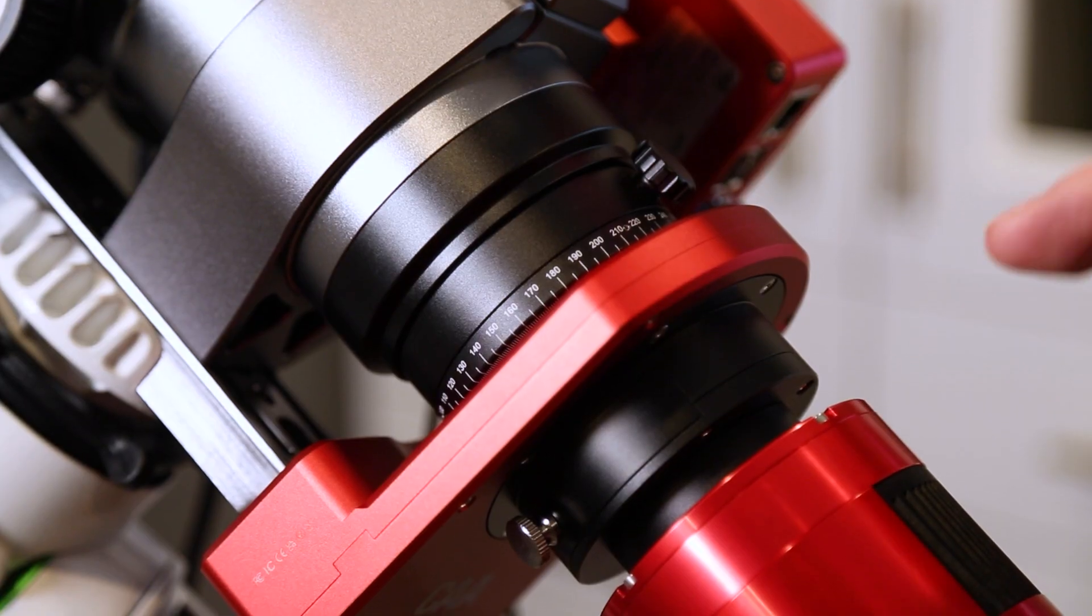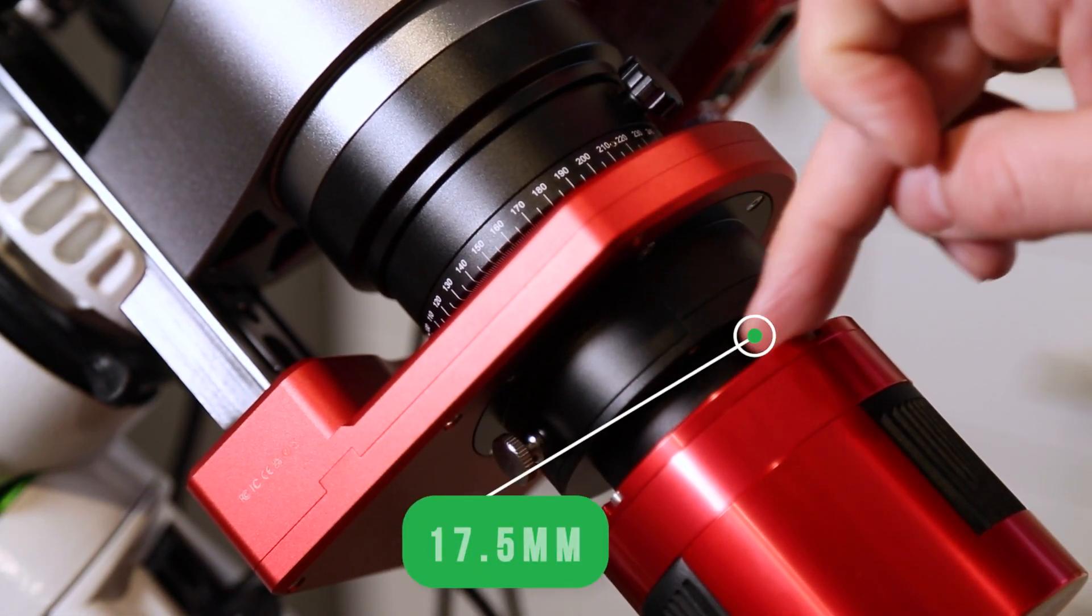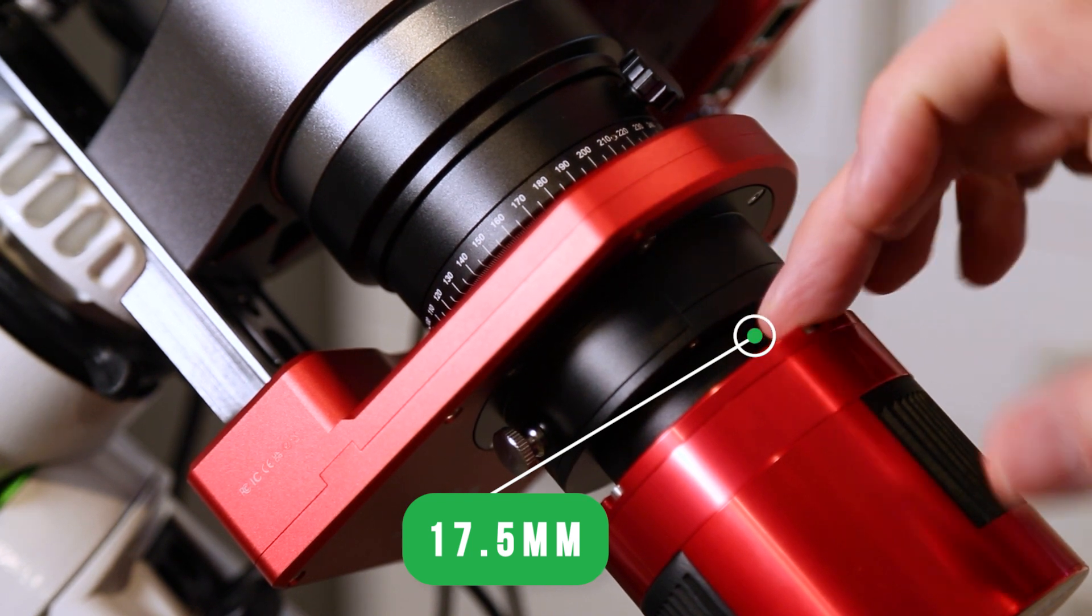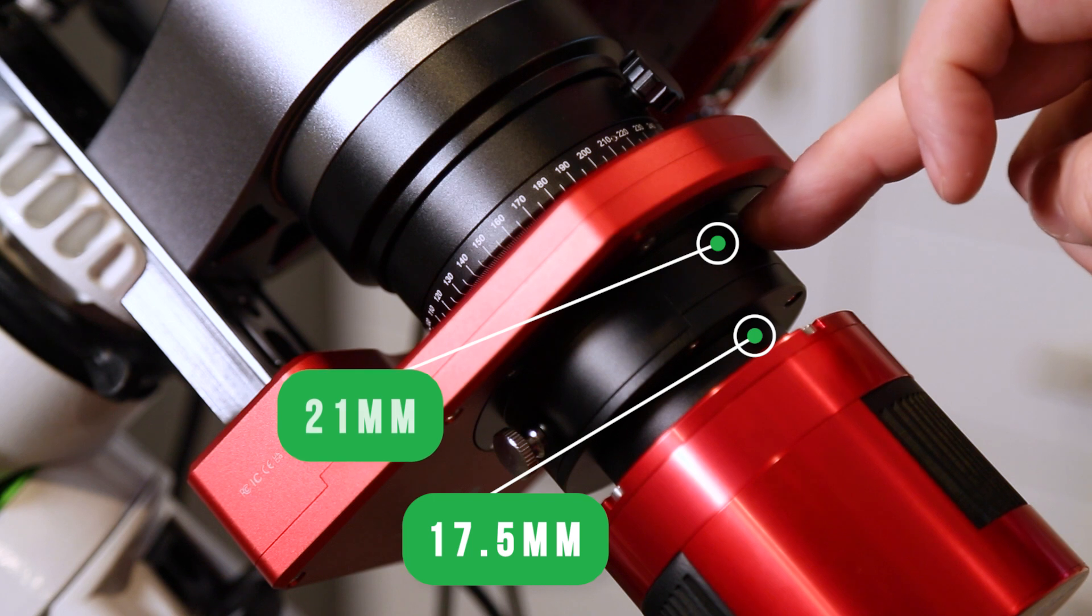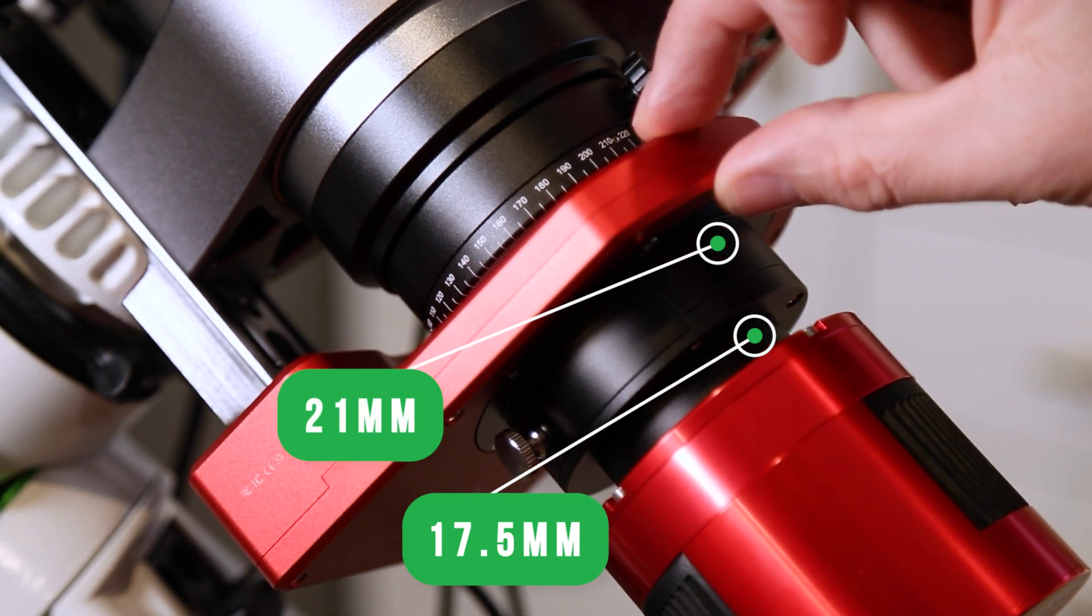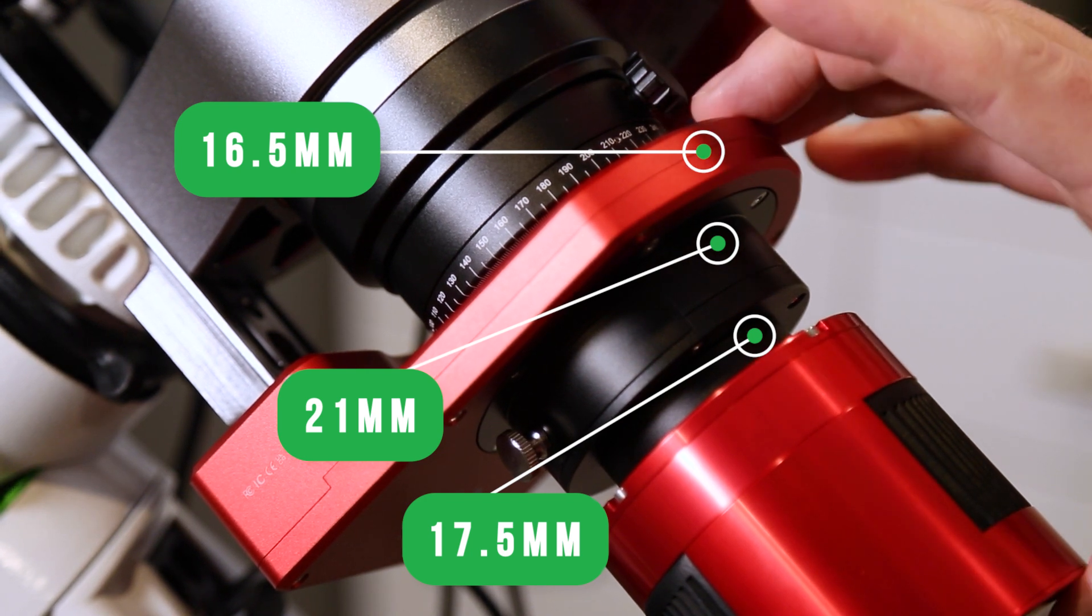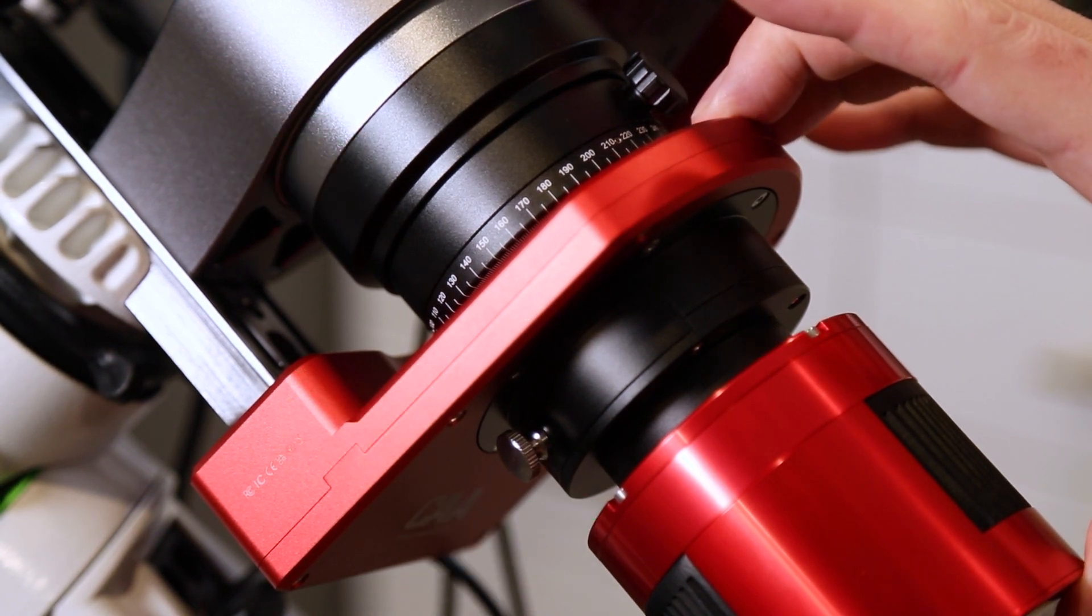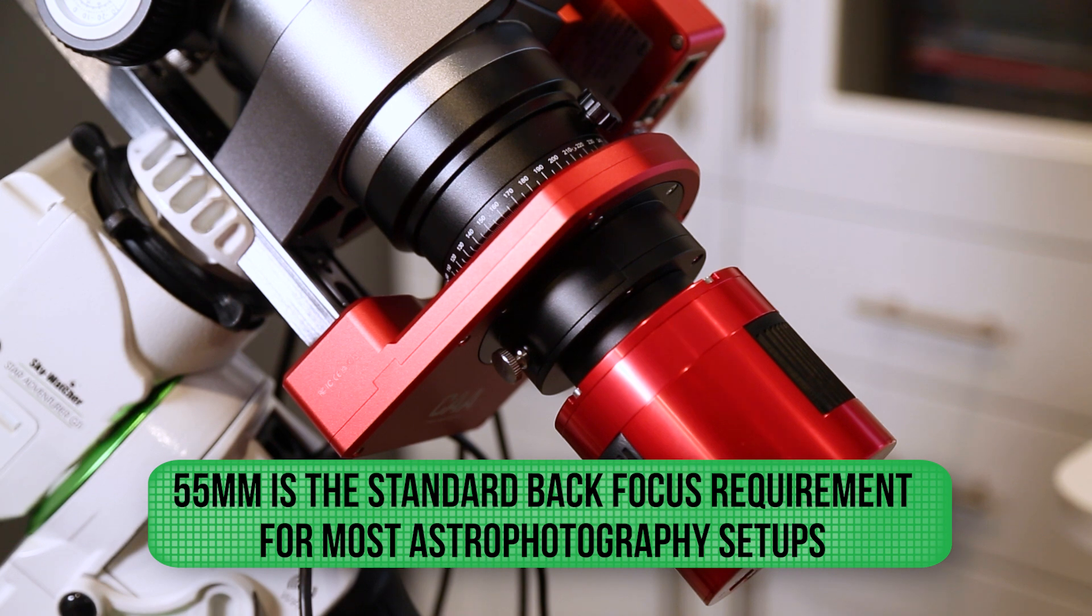So now that the camera's connected, let's just quickly go over our connections here. So we have 17.5 millimeters here, that's what the camera inherently takes up. Then we have 21 millimeters for the filter drawer, and then the camera angle adjuster takes up 16.5 millimeters for a total of 55 millimeters back focus, which is the standard back focus requirement for many astrophotography setups.